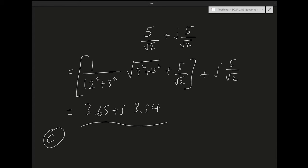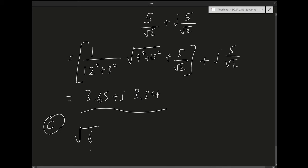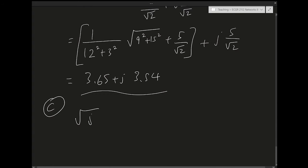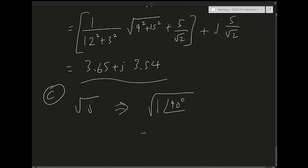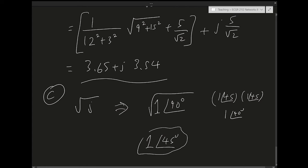Part C asks for the square root of j, and there should be two square roots. It helps to go to polar form. j in polar form is 1∠90°. The square root of 1 is 1, and we divide the angle by 2, giving 1∠45°. If I take 1∠45° and multiply it by itself, I get 1∠90° = j. So this is one square root of j — but there's another.